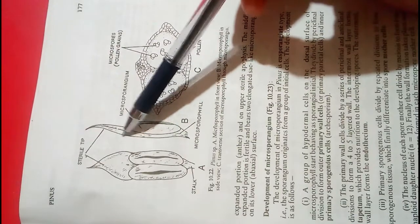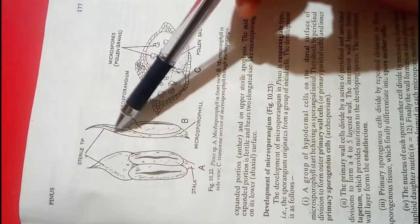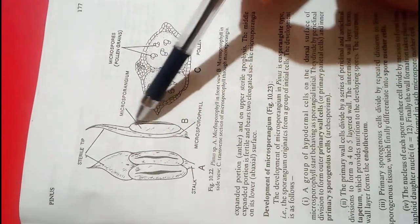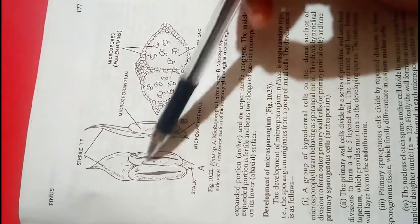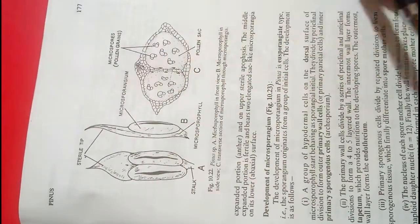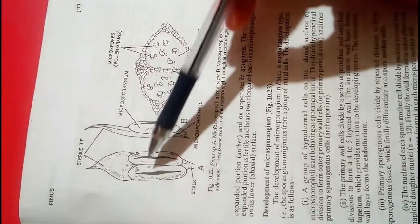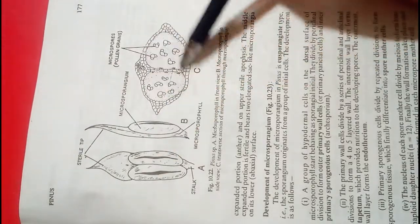On the lower side, you can see two microsporangia. Inside the microsporangia, the microspores or pollen grains will form.